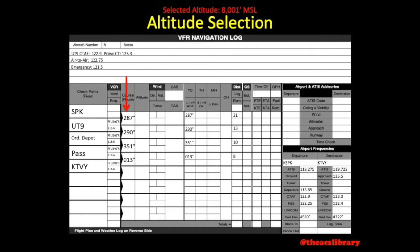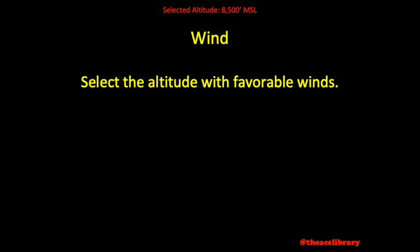Based on our true course in our NAV log, we anticipate that our magnetic course will fall within the category to the left — 180 through 359 degrees — for all but the last heading. That being said, we will adjust our desired altitude to 8,500 rather than 8,001, with a desired altitude 1,000 feet below that for the final leg. Lastly, we move on to the effects of wind on altitude selection. This subject is pretty intuitive: select altitudes with winds favoring your flight path.